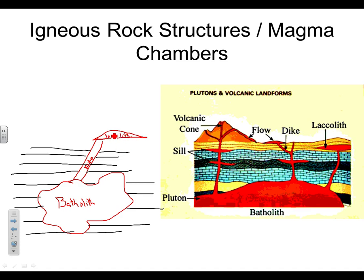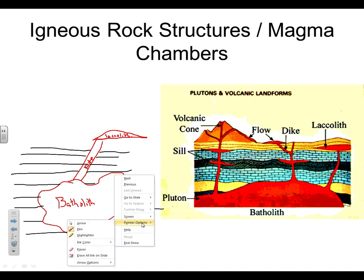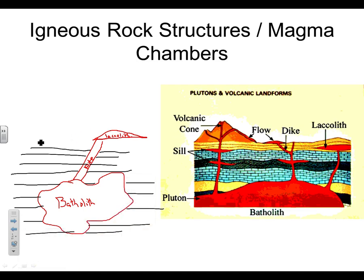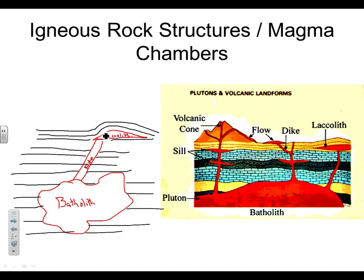The laccolith is going to be the second biggest one. The thing with the laccolith is it's not quite as hot as the batholith, so it's not going to melt through the rock layers. The rock layers are going to be bent up and around. It's still hot enough to get the rock layers soft, so it will seep between them and, as it expands upward, bend those rock layers up. Lots of times it will make a hill on the ground.